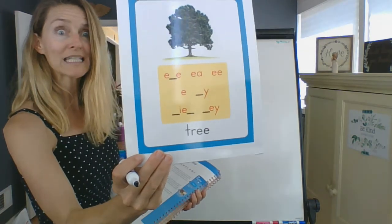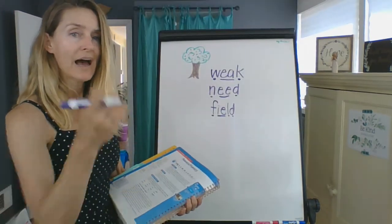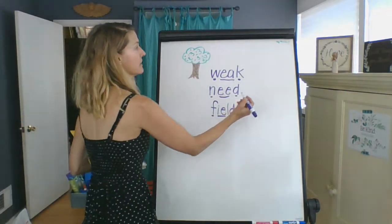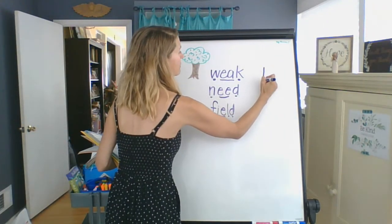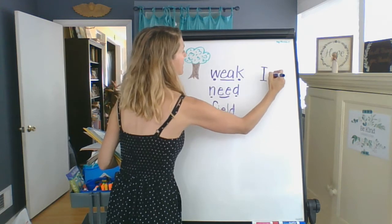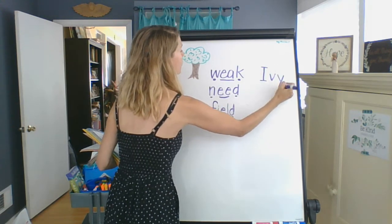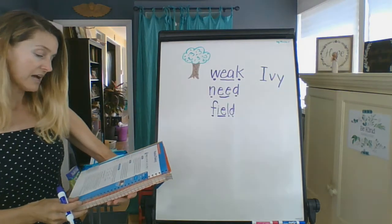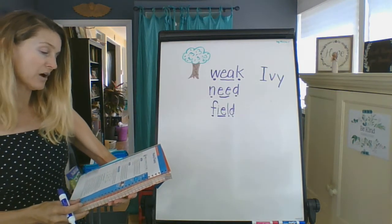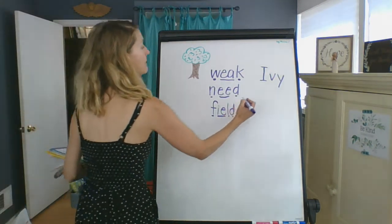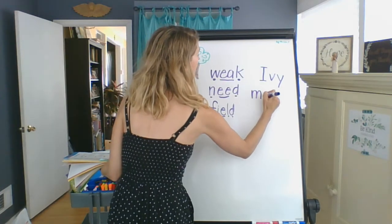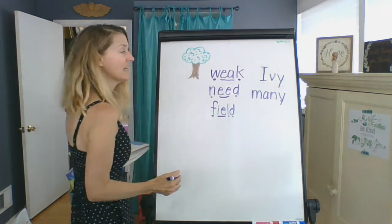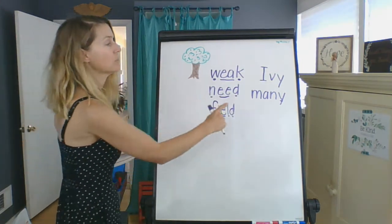I said we were going to get to Ivy — how does Ivy have an E sound? It's a proper noun, so I'm going to capitalize her name: I-V-Y. Sometimes at the very end of words you're going to see a Y, like in the word 'many.' 'Many' has an E sound at the end, and it's made with a Y.